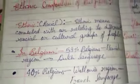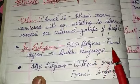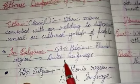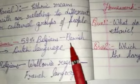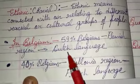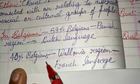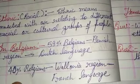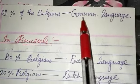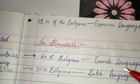In Belgium, 59% of Belgians live in the Flemish region and they speak Dutch language. Another 40% of Belgians live in the Wallonia region and they speak French language. The remaining 1% of Belgians speak German language. So the ethnic composition of Belgium is now clear.